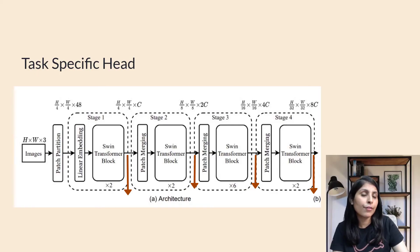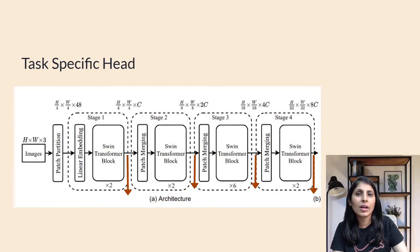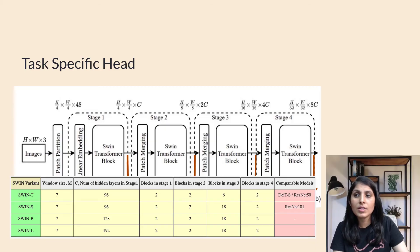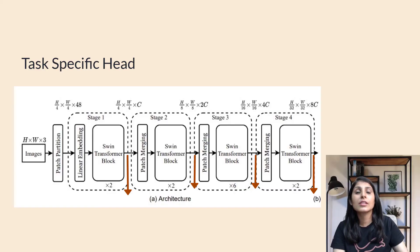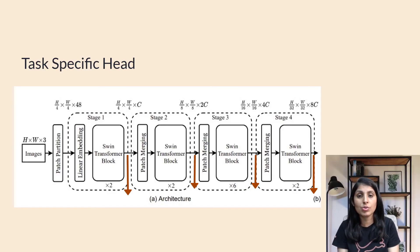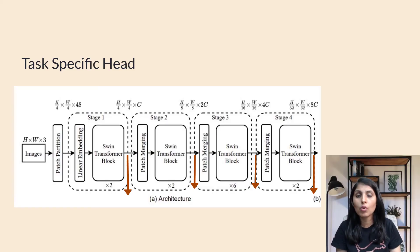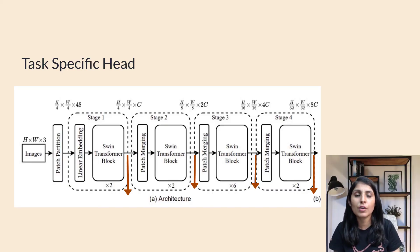There are four variants of the Swin Transformer: Tiny, Small, Base, and Large. The difference between them lies in parameters such as the channel dimension C and the number of layers. That's the basic idea of the Swin Transformer. In the next class, I'll show how to perform image classification and object detection using the Swin Transformer. I hope this video was helpful — thank you for watching.